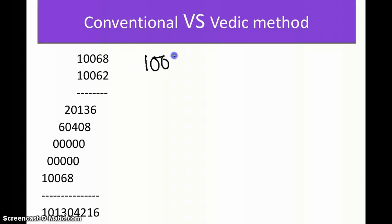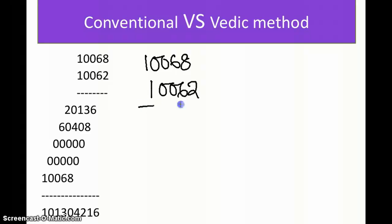For 10068 × 10062, before applying the formula we check the criteria: the unit digits 8 and 2 sum to 10, and the remaining parts — 1006 in both numbers — are the same. The criteria is satisfied. Multiplying the unit digits: 8 × 2 = 16, which goes on the right side.